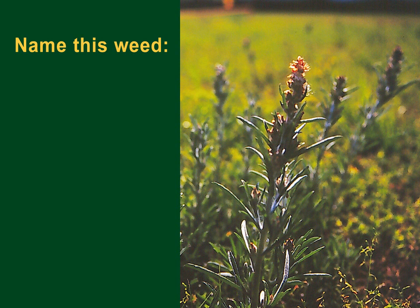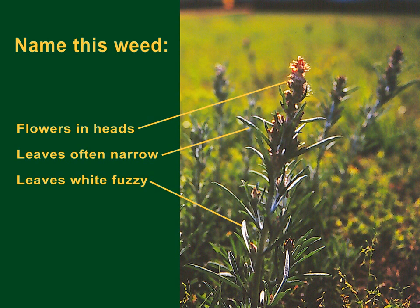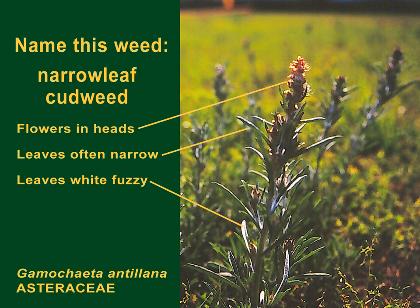Another important family is the sunflower family, or the Asteraceae, of which this weed is a member. In common with other members of the sunflower family, the flowers are in heads and they are showy, although very small. The leaves of this species are often narrow and white and fuzzy-looking because of many small hairs. This is narrowleaf cudweed in the Asteraceae, or the sunflower family. It's very difficult to control.